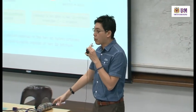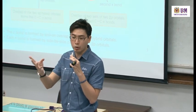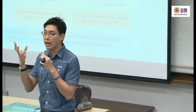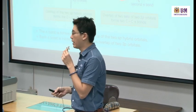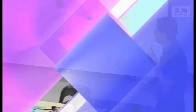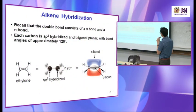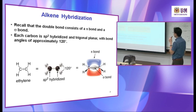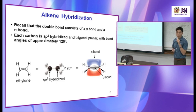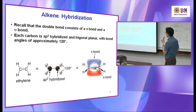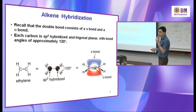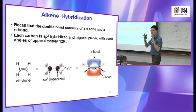If you compare sp3, sp2, and sp — sp has the most s character, almost 50%. In an alkyne, two p orbitals overlap to form two pi bonds: one overlap from above, the other from the side. So there are two electron clouds around the triple bond, which is why alkyne has a linear shape — it is not bent.